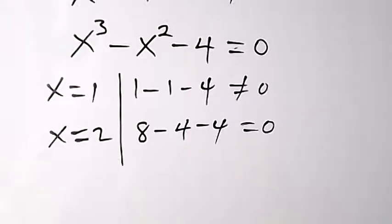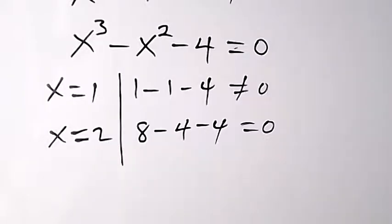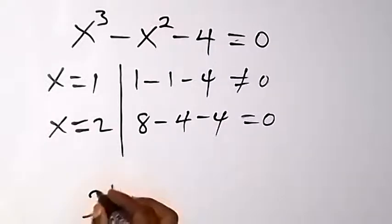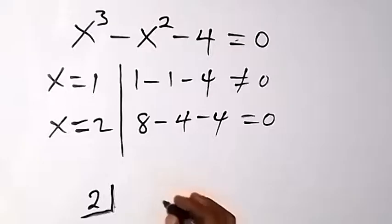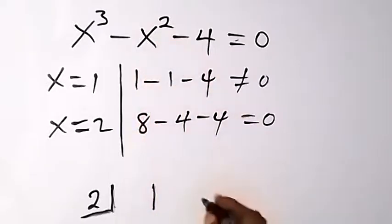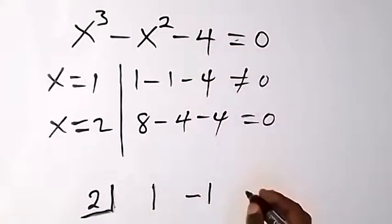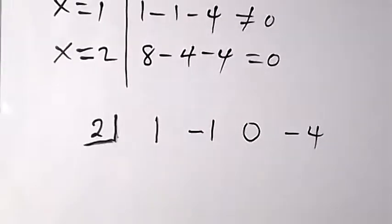We can get the other roots by using x equals 2 to divide — let's use synthetic division to divide this polynomial by 2. We take the coefficients: the coefficient of x cubed is 1, the coefficient of x squared is minus 1, there is no x term so the coefficient is 0, and the constant is minus 4.